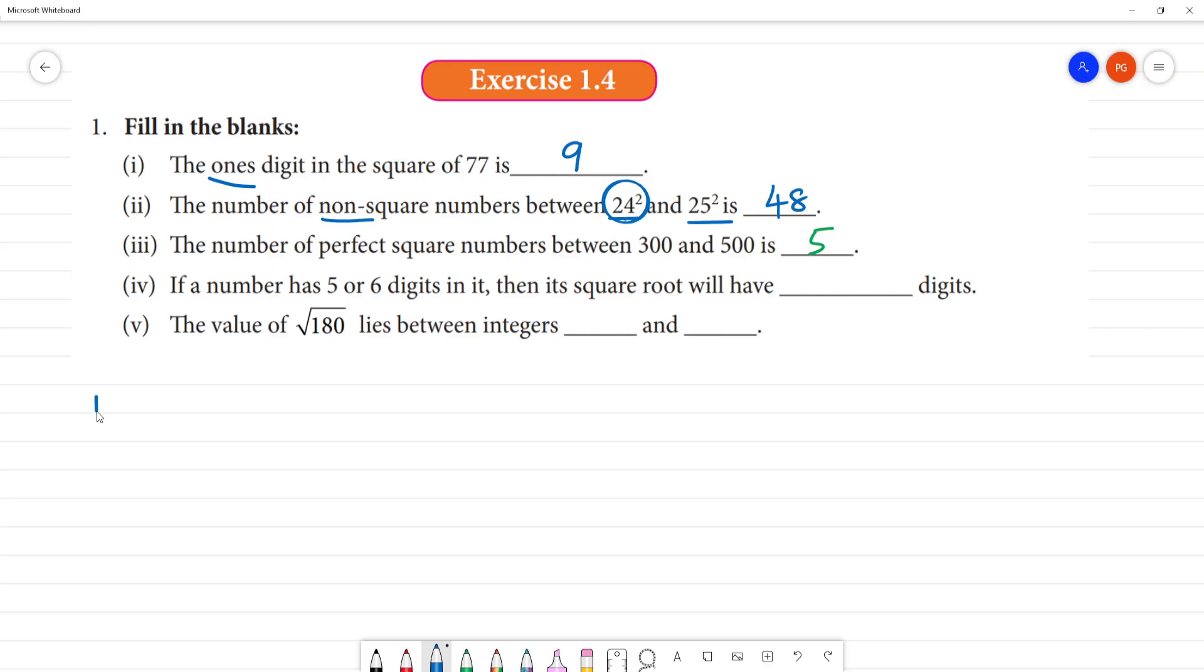Next, fourth one. If a number has 5 or 6 digits in it, then square root will have how many digits? So, this is a hint. If we have 5 digits: 1 followed by 4 zeros, that's 10000. So n equals 5. This is an odd number.